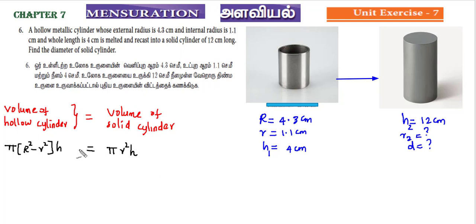So you can cancel this π. Let me substitute this. Capital R is 4.3, so 4.3 the whole square minus small r is 1.1 the whole square into h. This height is h1 and this height is h2. h1 is 4. This radius is r square. This height is 12, solid cylinder height is 12.